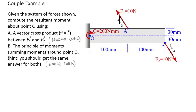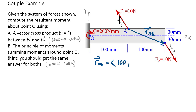I've decided to start at point A and draw my r vector from A to B, so r_AB. Writing out that position vector r_AB as a vector in a Cartesian coordinate system with horizontal x and vertical y: we move 100 millimeters to the right in x, and then down 60 millimeters in y, giving us r_AB = 100î − 60ĵ millimeters.